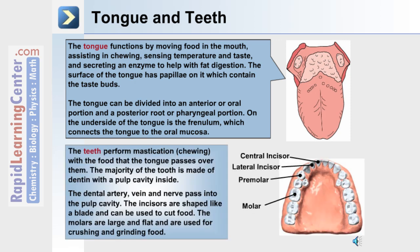This diagram shows the different types of teeth in the oral cavity. In the center are the central incisors, next to them are the lateral incisors, followed by a premolar and a molar. The teeth are for chewing, which breaks up the food, and the tongue moves the food over the teeth for this process. The majority of a tooth is made of dentin with a pulp cavity inside, and there is also a dental artery, vein, and nerve which pass up through the pulp cavity. The incisors are shaped like a blade and can be used to cut food, while the molars are large and flat, used for crushing and grinding food.